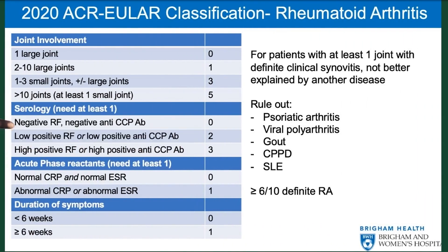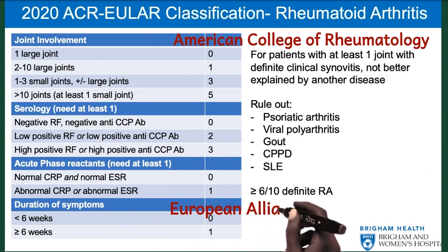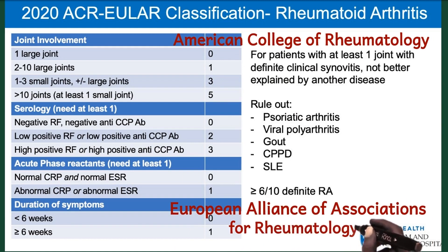Now let's see the diagnostic criteria which will help us answer the MCQ. This is the 2020 ACR/EULAR classification for rheumatoid arthritis. ACR stands for the American College of Rheumatology and EULAR stands for the European Alliance of Associations for Rheumatology. For this classification or scoring system, we need at least six points in order to make a diagnosis of definite rheumatoid arthritis. Let's see the parameters assessed by this criteria.